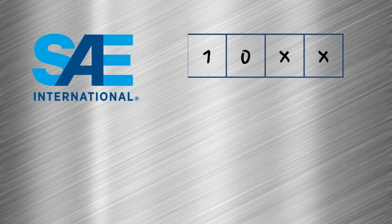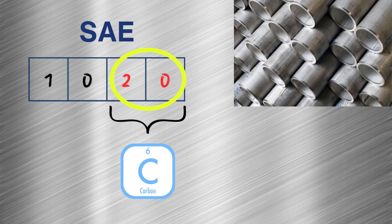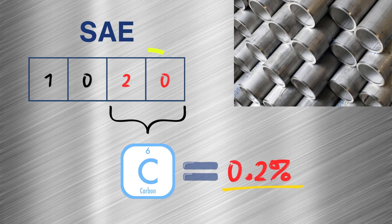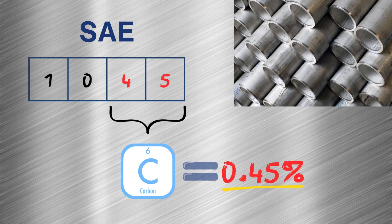The SAE designation of carbon steel is in the format of 10XX, where XX indicates the amount of carbon. For example, 1020 contains 0.2% of carbon, and 1045 contains 0.45% of carbon.